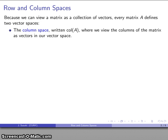First of all, there's a column space, written col(A), where I view the columns of the matrix as vectors in a vector space. Now, you should convince yourself that you do actually get a vector space here because our vectors will have to satisfy all those requirements.